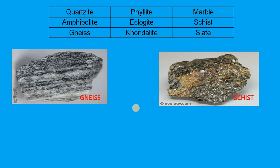If we see the picture, gneiss is the best example of a metamorphic rock, and schist is another important metamorphic rock. Apart from gneiss and schist, we also find quartzite, amphibolite, phyllite, eclogite, granulite, marble, slate, and some other important metamorphic rocks.